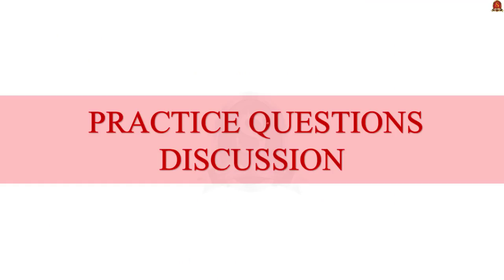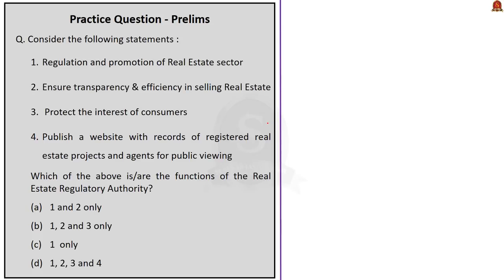Practice prelims question 1: Consider the following statements about functions of the Real Estate Regulatory Authority — (1) Regulation and promotion of real estate sector; (2) Ensure transparency and efficiency in selling real estate; (3) Protect the interest of consumers; (4) Publish a website with records of registered real estate projects and agents for public viewing. Which of the above are functions? The answer is Option D — all four statements (1, 2, 3, and 4) are functions of the Real Estate Regulatory Authority.